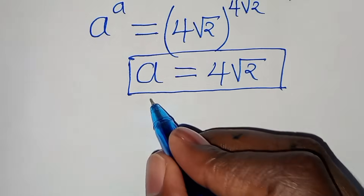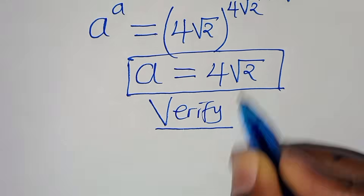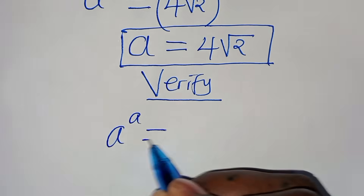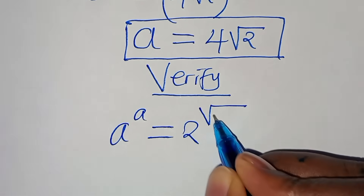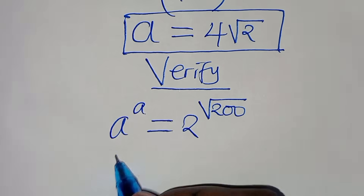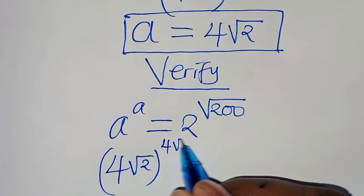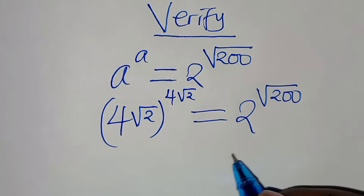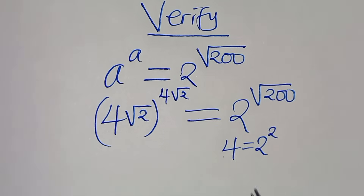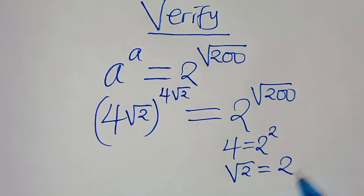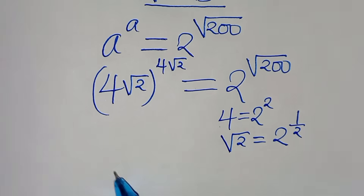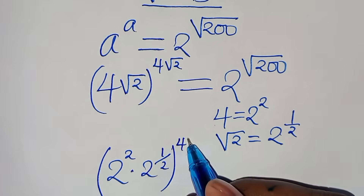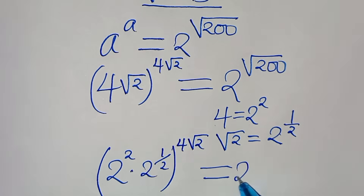Now let's verify that this value of a satisfies the equation. We need to check that a to the power of a equals 2 to the power of square root of 200. Substituting a equals 4 square root of 2, we have 4 square root of 2 raised to the power of 4 square root of 2, equal to 2 to the power of square root of 200. Expressing 4 as 2 squared and square root of 2 as 2 to the power of a half, we get 2 squared times 2 to the half, raised to the power of 4 square root of 2.